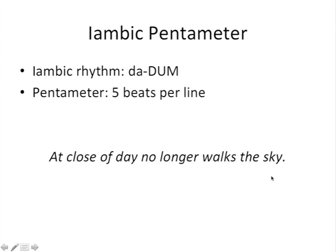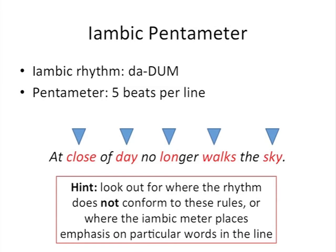Have a look at this line taken from the poem: 'At close of day no longer walks the sky.' Now it's really important when you're talking about iambic pentameter in your essays that you're not just identifying it — it's not enough just to say this poem is written in iambic pentameter. You need to show why it's important. Look out for where the rhythm does not conform to those rules, or where the iambic metre places emphasis on particular words. For example, the word 'close' is stressed here, telling us this is a poem about endings — the close of day, the end of the day.